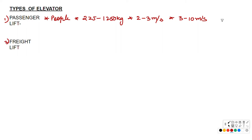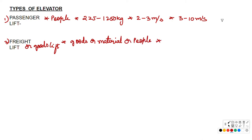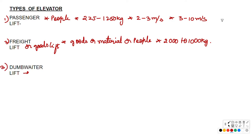Next is the freight lift, also called goods lift. It is designed to carry goods or materials, and sometimes even passengers. It can carry about 2,000 to 10,000 kg depending on the height of the building.